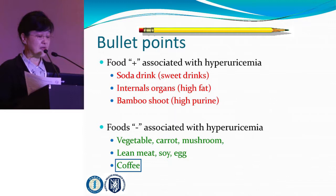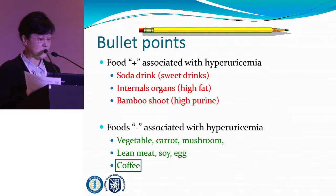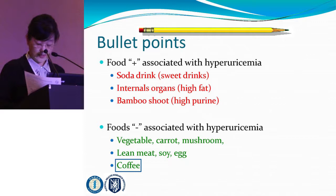So in conclusion for hyperuricemia: foods positively associated with high uric acid include soda drinks, sweet drinks, and bamboo shoot, which is high in purines. But we find that most vegetables, including mushrooms, lean meat, and soy, are negatively associated with uric acid levels in the blood. I'd like to draw your attention to the fact that coffee also stands out as negatively associated — an interesting insight into foods related to different biological phenomena.